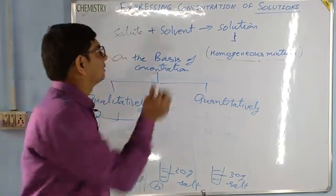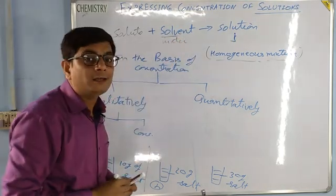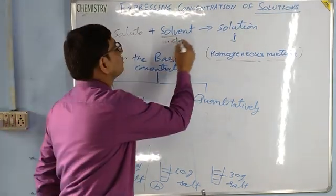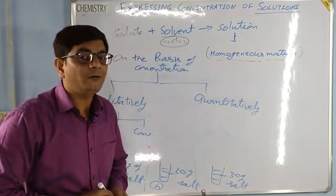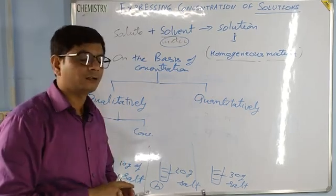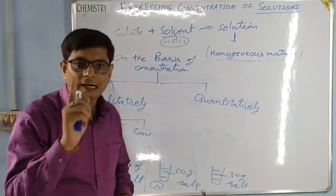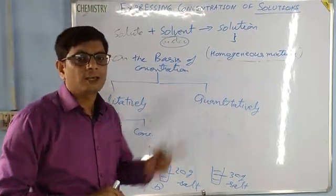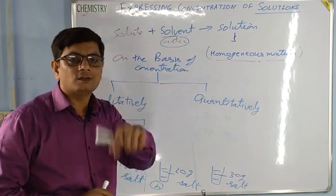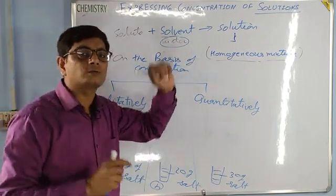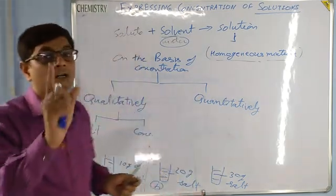Whatever we are considering here are called aqueous solutions. If the solvent is water, it is called an aqueous solution. For example, salt dissolving in water, sugar dissolving in water, or alcohol dissolving in water. If benzene or carbon tetrachloride or any other substance is the solvent, that is called a non-aqueous solution. In this chapter especially, we will discuss about the aqueous solution, where water is the solvent.